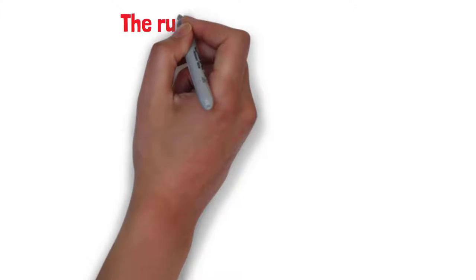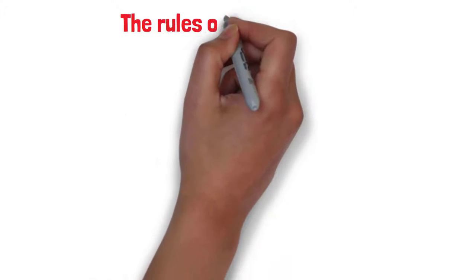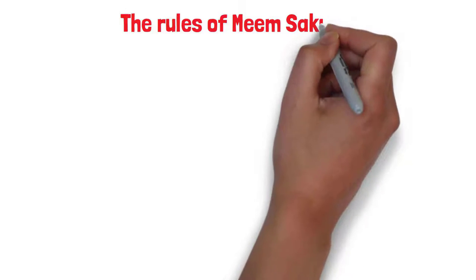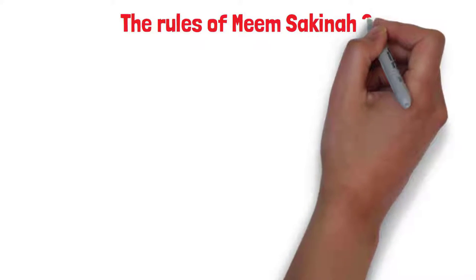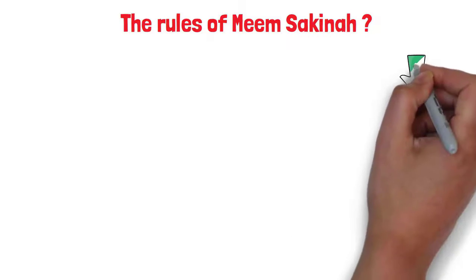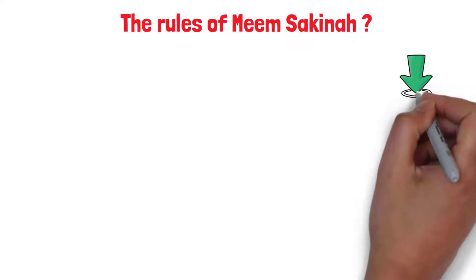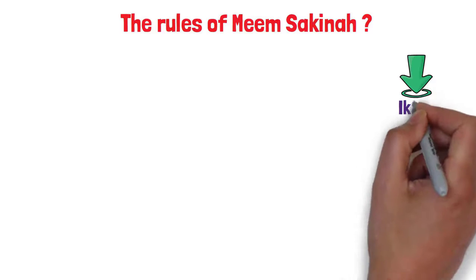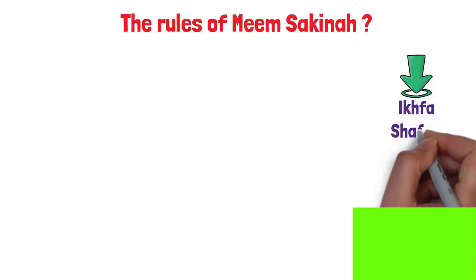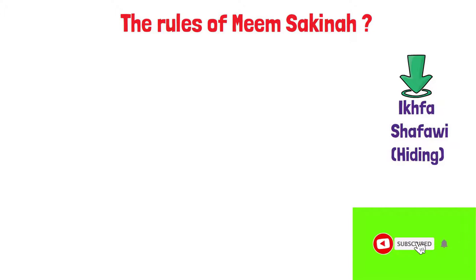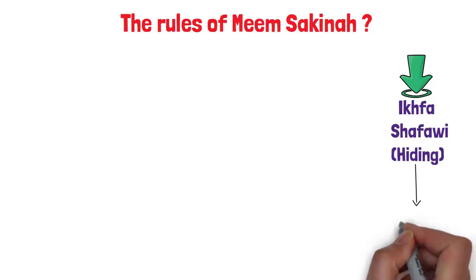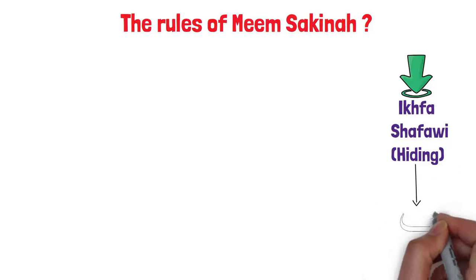Let's move to the group of Meem Sakinah, which has three rules. The first one is called إخفاء (hiding), but it's different from the other إخفاء. That one is called إخفاء شفوي, and it happens when you have Meem Sakinah followed by با, such as لكم به.